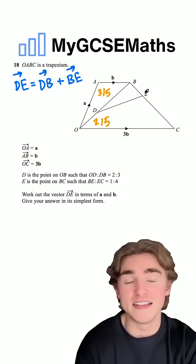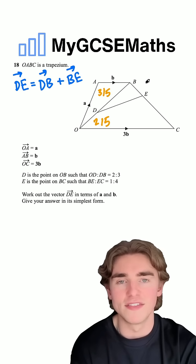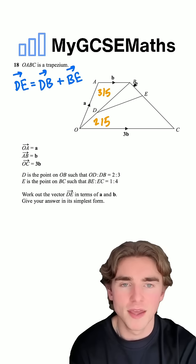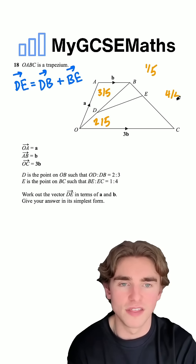What about BE? Well, we know that the ratio of BE to EC is 1 to 4. So in the same way, five parts this time, but BE is one of them, so it's going to be one-fifth of the total, and EC is going to be four-fifths.